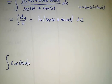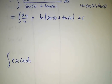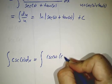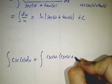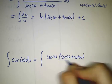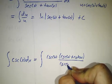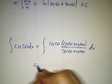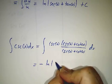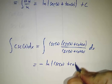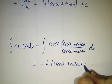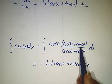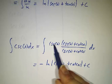For the cosecant, it's the same process. We write this as the integral of cosecant of x times cosecant of x plus cotangent of x, divided by cosecant of x plus cotangent of x. That winds up being minus the natural log of the absolute value of cosecant of x plus cotangent of x, plus a constant. Because the derivative of cosecant is minus cosecant cotangent, and the derivative of cotangent is minus cosecant squared.